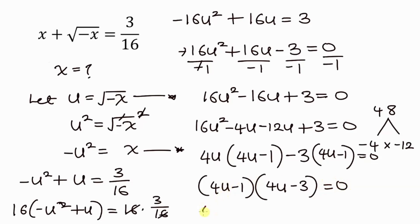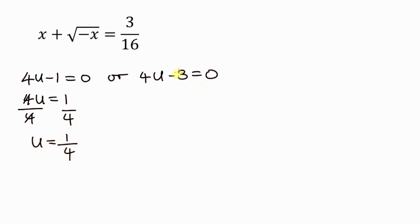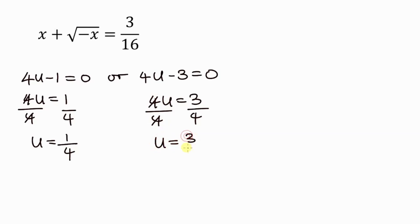We have two cases: 4u minus 1 equals 0, or 4u minus 3 equals 0. From the first case, 4u equals 1, so u equals 1 over 4. From the second case, 4u equals 3, so u equals 3 over 4.